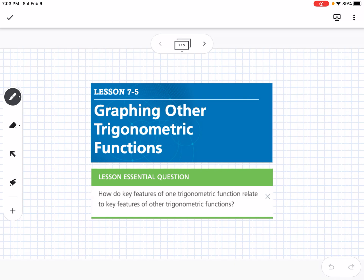This is Lesson 7-5, which is graphing other trigonometric functions. Our essential question is, how do key features of one trigonometric function relate to key features of other trigonometric functions?